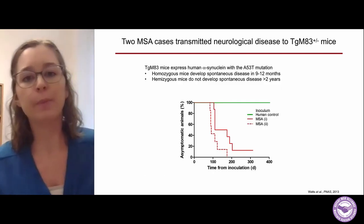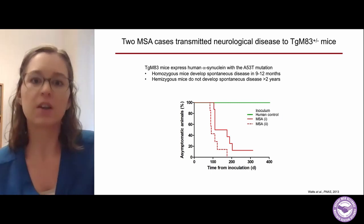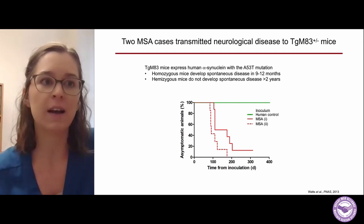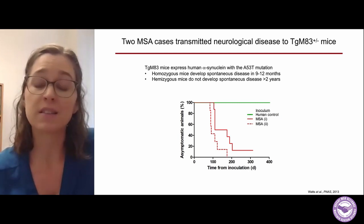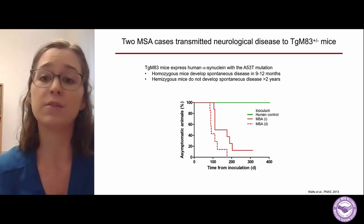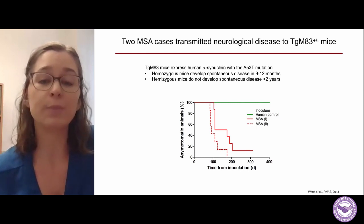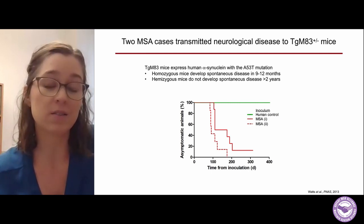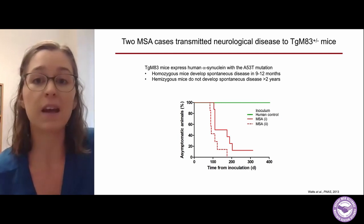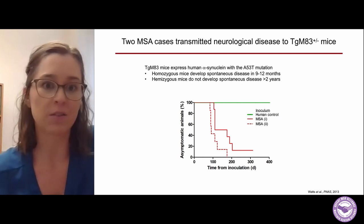Back in 2013, work in the Prusiner Lab started focusing on thinking about multiple system atrophy as a prion disease and investigating if it acts similarly. To begin these experiments, they used a transgenic mouse model that expresses human alpha-synuclein with one of the Parkinson's disease mutations, which is A53T. Whenever you see M83 mice, think of the A53T mutation throughout this talk.